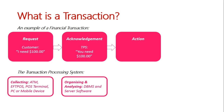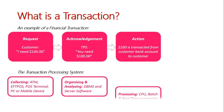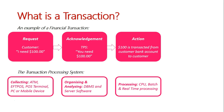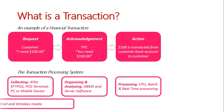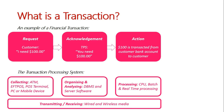We then have the action. Once confirmation is made, the action is basically $100 being transacted from the customer's bank account to the customer. This is done through processing using the CPU, and it can be done in batch or real-time, depending on how the customer is going about this — the two types of processing in a transaction processing system. While all of this has been taking place between the request, the acknowledgement, and the action, there has been transmitting and receiving occurring through wireless and wired media, depending on what type of system they are using.